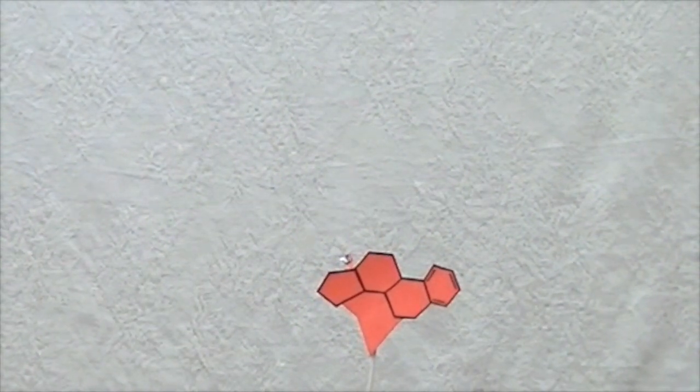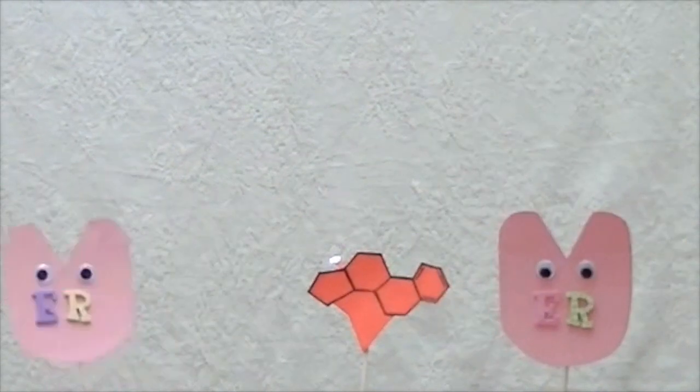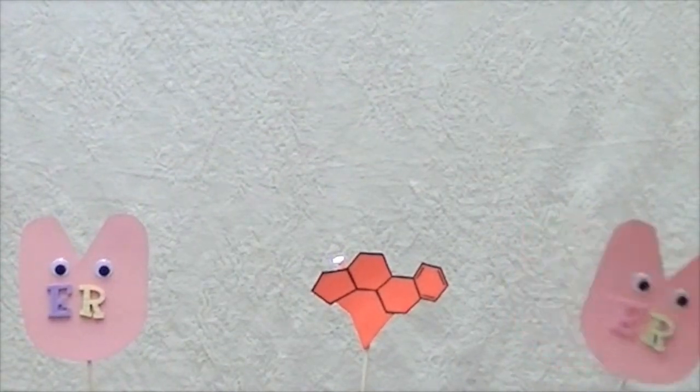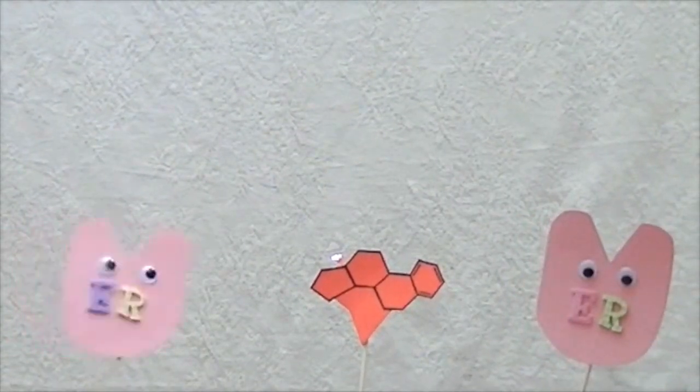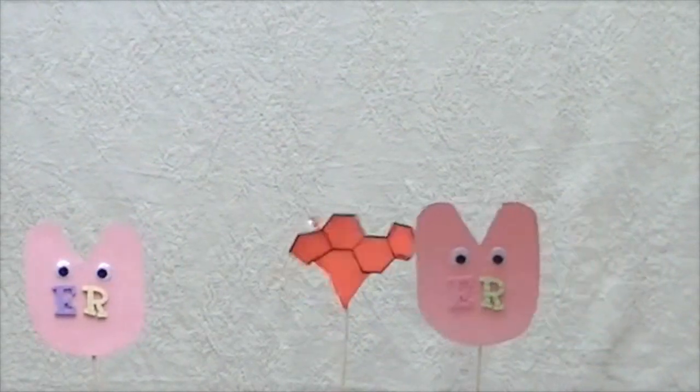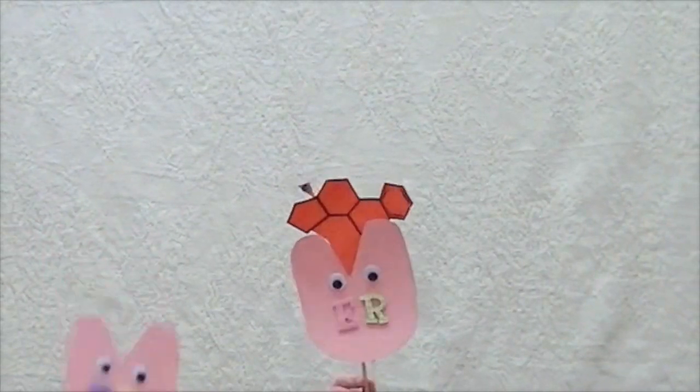Estrogen acts in the body through the estrogen receptor pathway. There are two different forms of the estrogen receptor, usually referred to as alpha and beta, each encoded by a separate gene, ESR1 and ESR2.